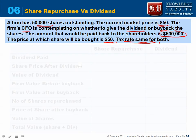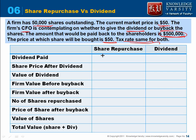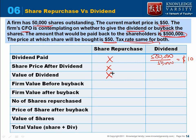Let's see the impact. For the dividend case, the company wants to pay $500,000 to shareholders. With 50,000 shares outstanding, the dividend per share comes out to $10. So $10 is the per-share dividend, and the stock price before the dividend was $50.